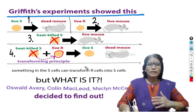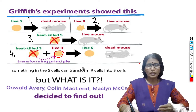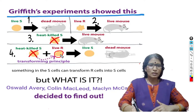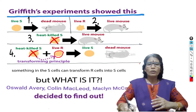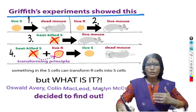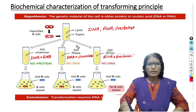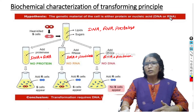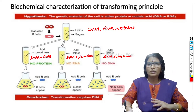However, Frederick Griffith did not identify which molecule caused the transformation — whether it was DNA, RNA, or protein. In the search for that particular molecule, Oswald Avery, Colin MacLeod, and McCarty decided to find out which material is responsible as genetic material. They repeated this experiment to identify the genetic material. The main hypothesis was that the genetic material of the cell is either protein, DNA, or RNA — both DNA and RNA being nucleic acids. The experiment is named biochemical characterization of transforming principle.